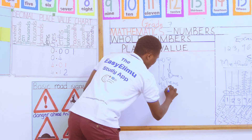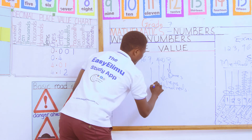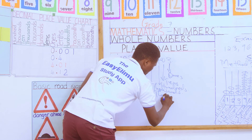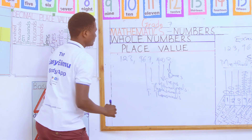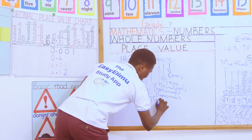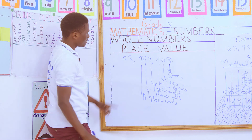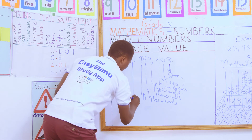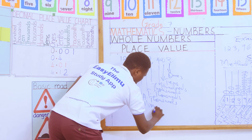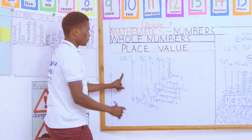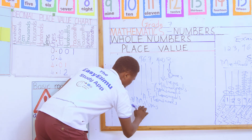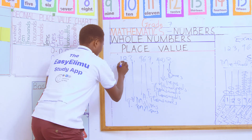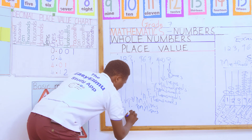Continuing from hundreds: next is thousands, then tens of thousands, then hundreds of thousands. After hundreds of thousands we have millions, then tens of thousands — I'll use capital T to denote tens of millions. The last digit, which is 1, has a place value of hundreds of millions. So we have now fully solved the place value using method two.